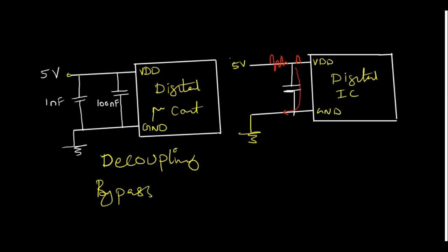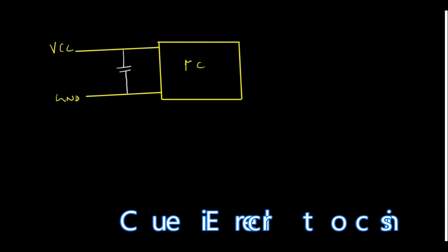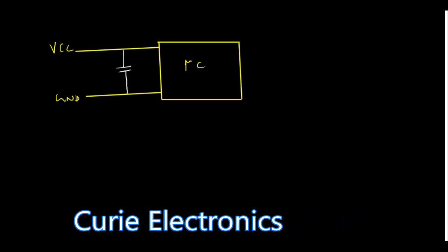Now let us try to understand a little more in a better way by taking one example. Now this is a microcontroller circuit or digital circuit, whatever it is. Now the ground. Now I will connect a 100 nanofarad. For simplicity, I am taking only one capacitor, that is a 100 nanofarad capacitor.